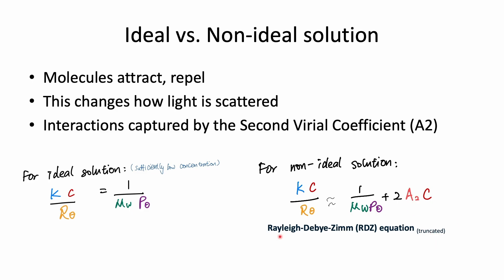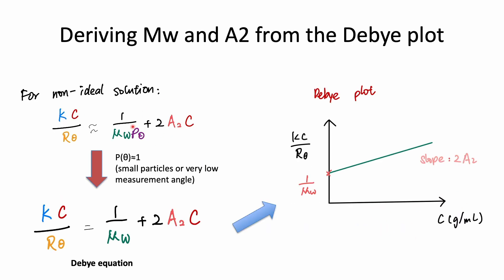To be comprehensive, the Rayleigh-Debye-Zimm equation should include higher-order terms like A3, A4, A5, representing interactions among three, four, or more particles. But for practical purposes, it is normally expressed in truncated form. If we simplify by setting P(θ) ≈ 1 — valid for Rayleigh scattering (very small particles) or measurements at very low angle — the equation becomes much more manageable: the so-called Debye equation. Taking Kc/R(θ) as the y-axis and concentration as the x-axis, extrapolating back to zero concentration gives the intercept 1/MW, and the slope is 2A2.